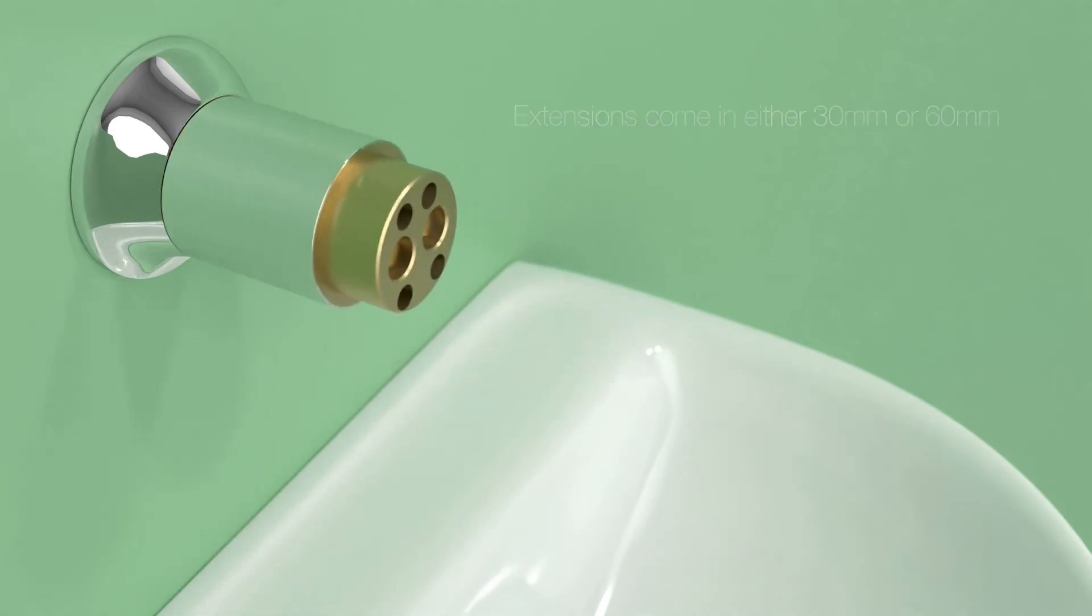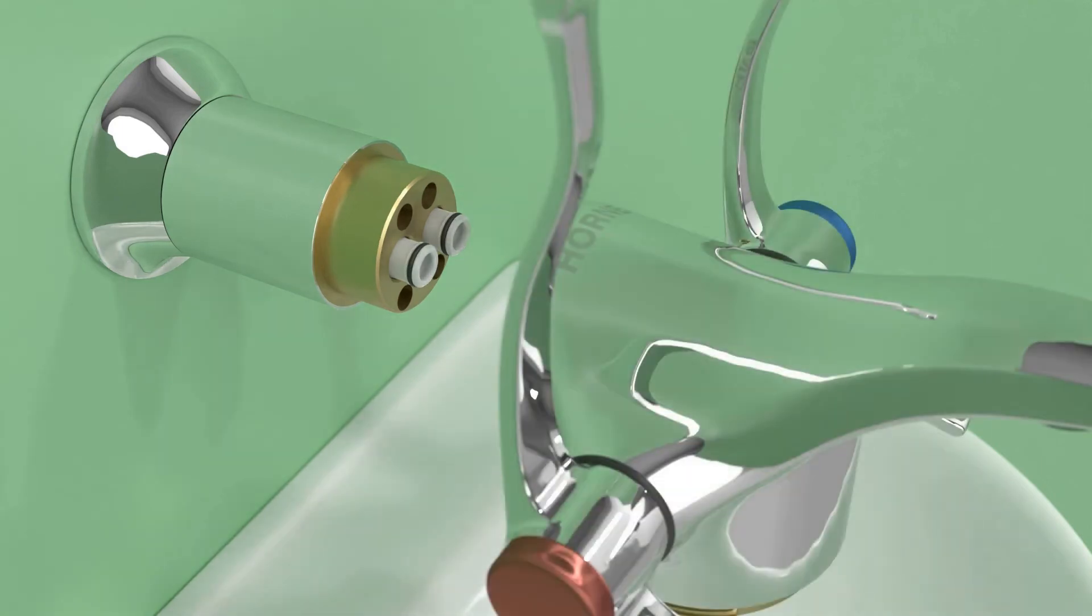Offer the longer extension piece up to the tap spigot, making sure the interconnect nozzles are correctly positioned. Secure the extension piece with the four M5 screws and washers.